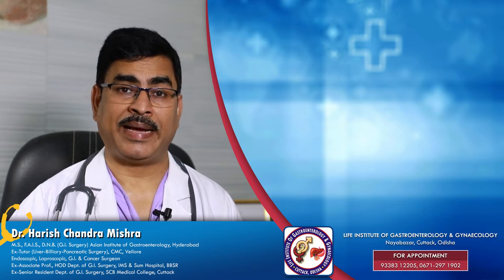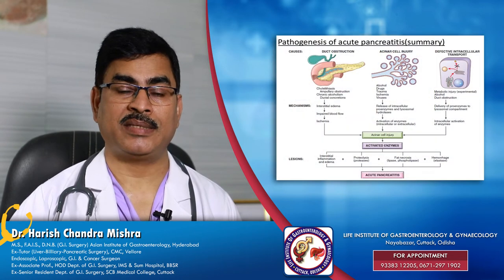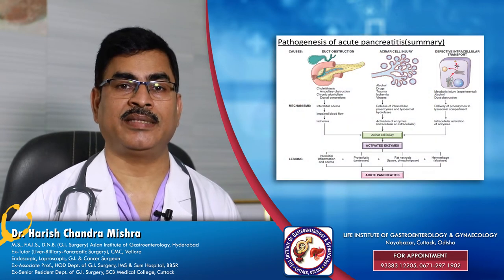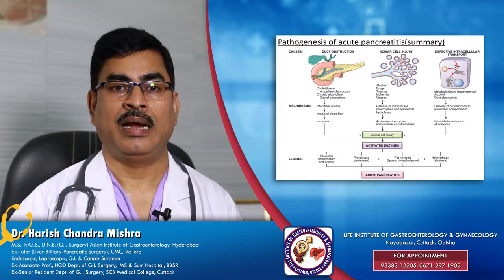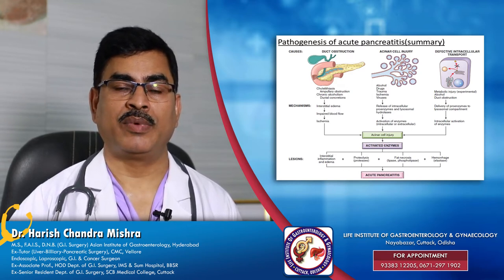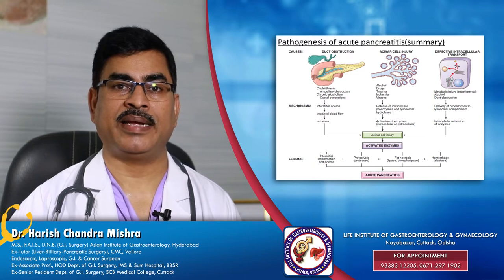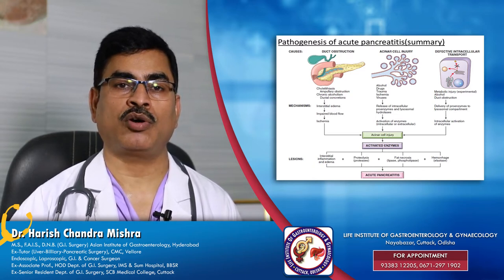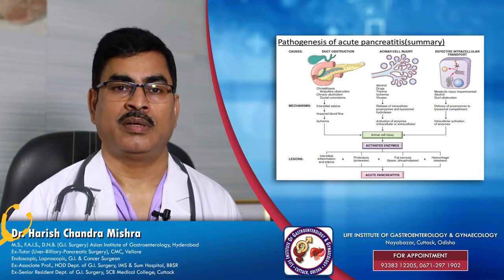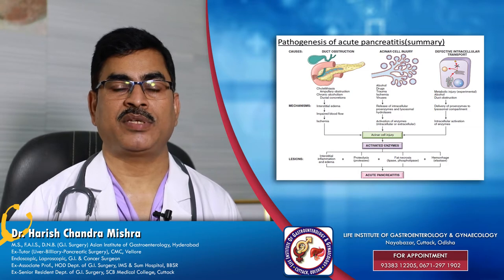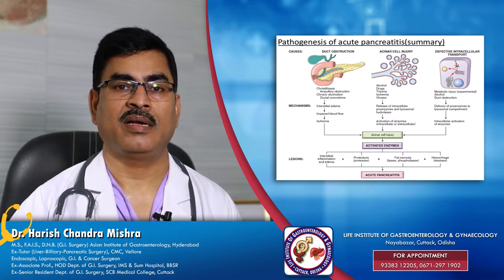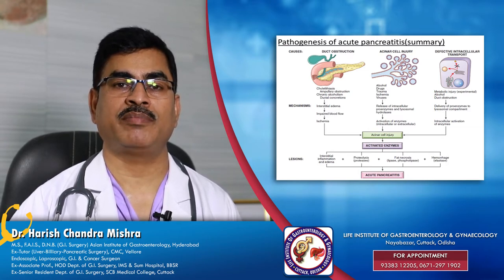The basic mechanism of pancreatitis is either the duct obstruction theory — where the pancreatic duct is blocked and there is stimulation of pancreatic enzymes within the gland, leading to autodigestion of pancreatic tissue — called the acinar cell theory. Sometimes there may be a genetic link associated with stimulation of pancreatic enzymes within the pancreas.